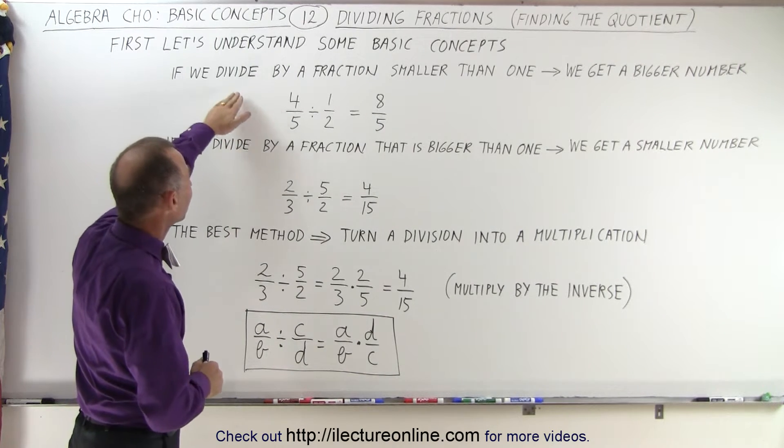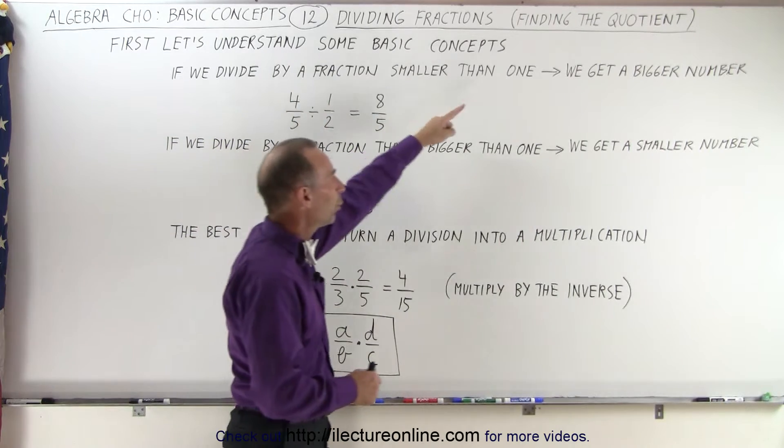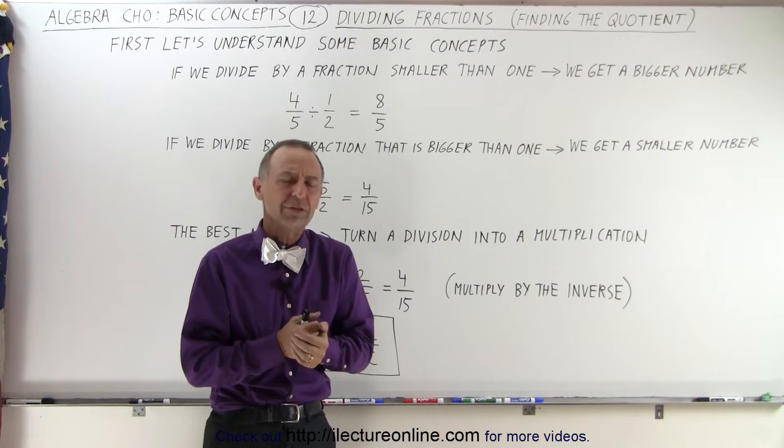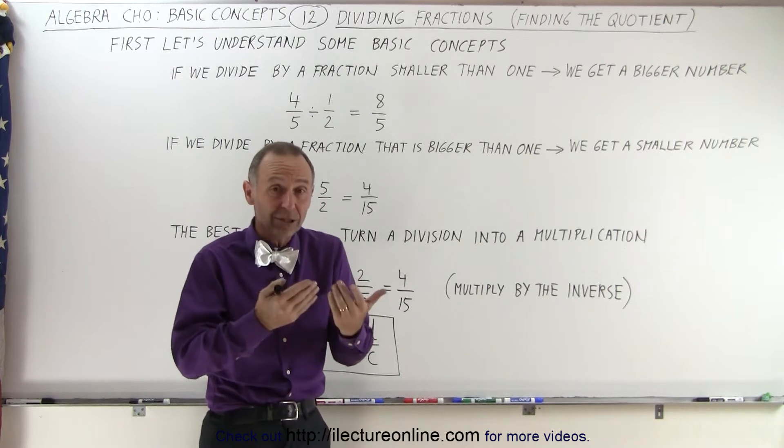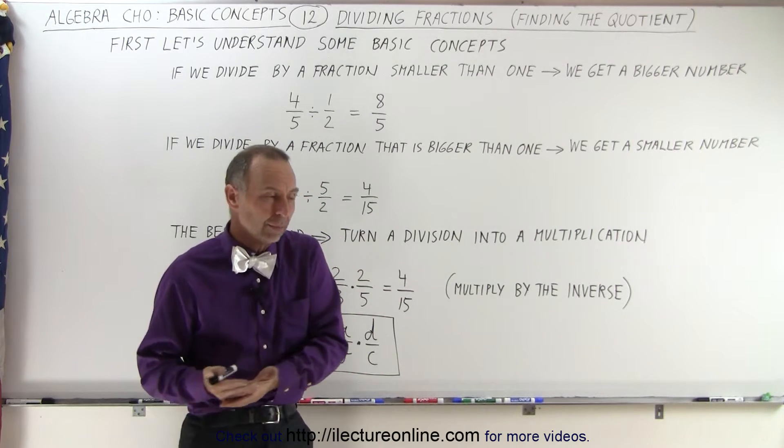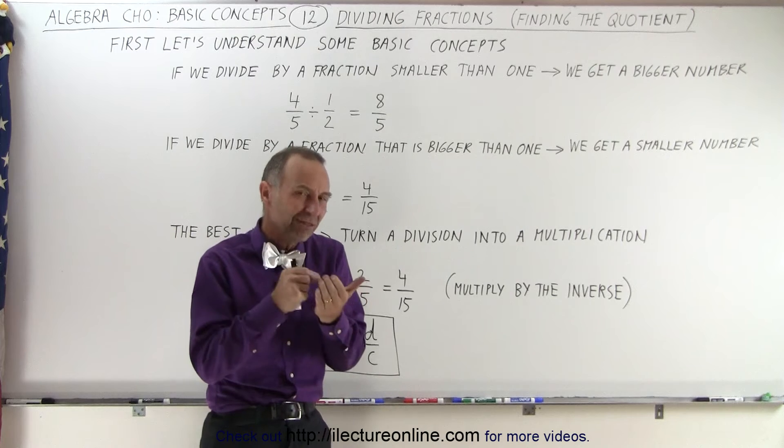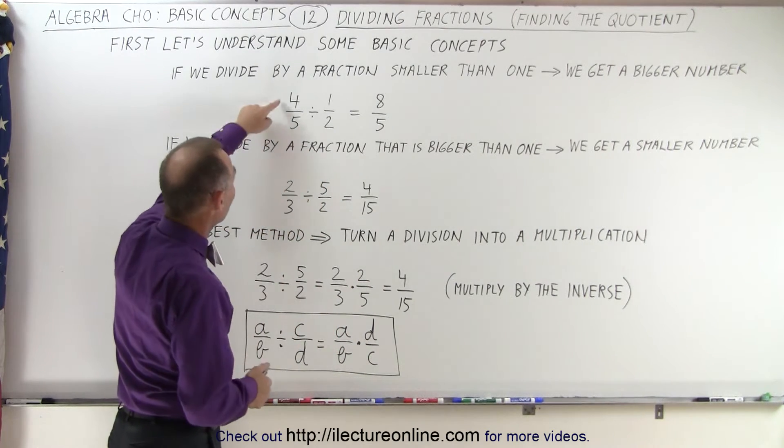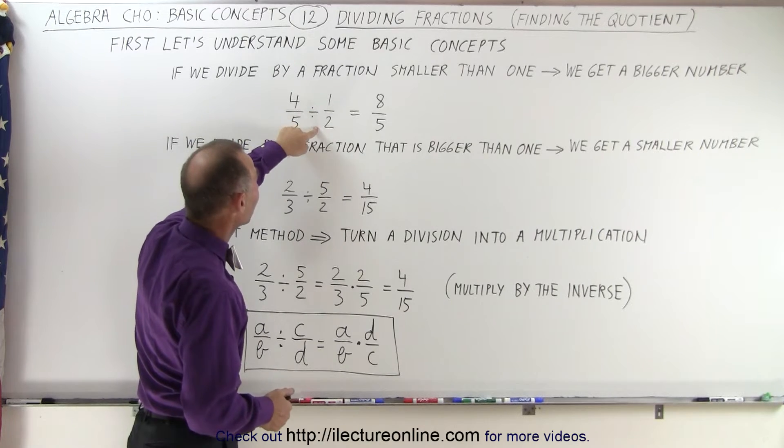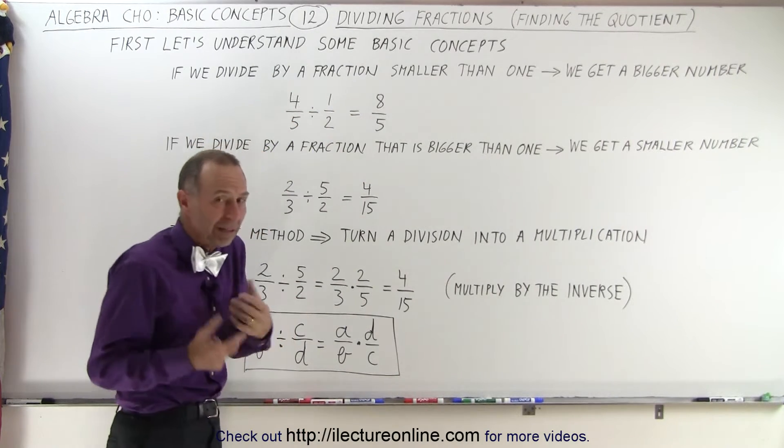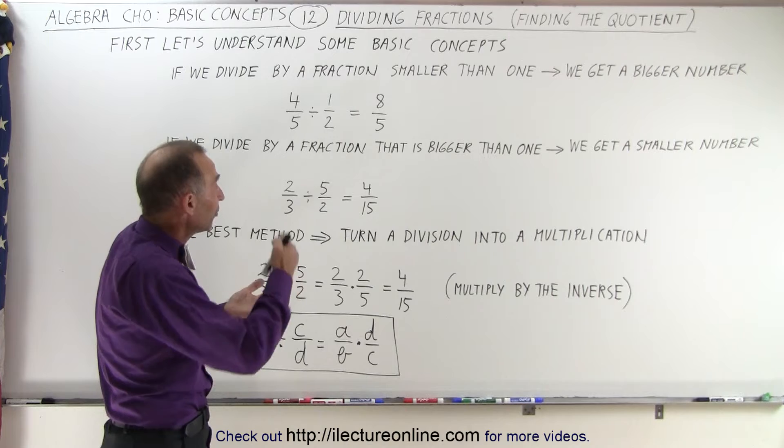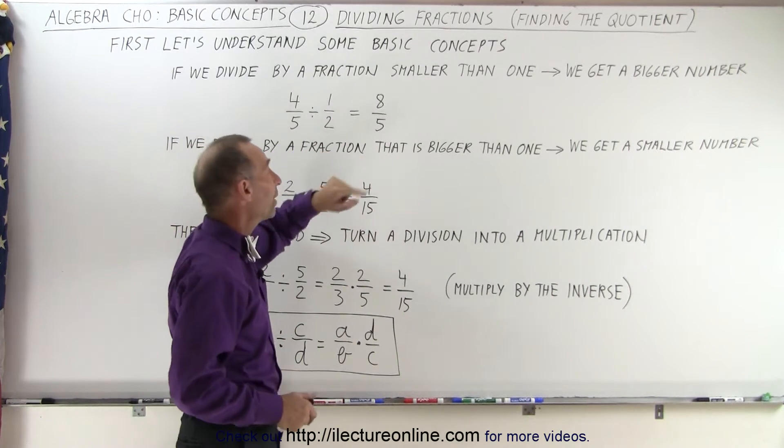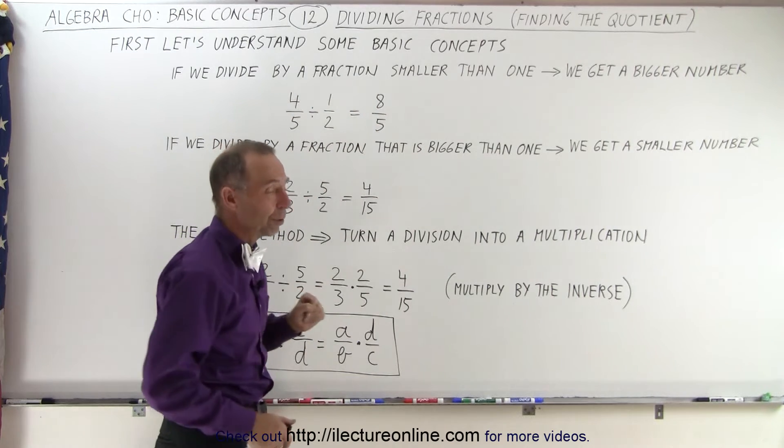First of all, if we divide by a fraction which is smaller than 1, the number actually gets bigger, which is kind of counterintuitive because normally when we divide a number, the number gets smaller. But if we divide by a fraction which is less than 1, the number actually gets bigger. Here's an example: 4 fifths divided by 1 half becomes 8 fifths. So even though we're dividing, our answer is bigger than the number we started with. If we divide by 1 half, the number becomes twice as big because 8 is twice as big as 4.